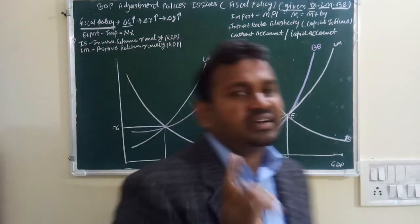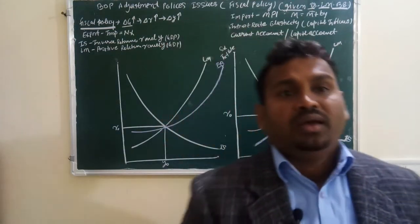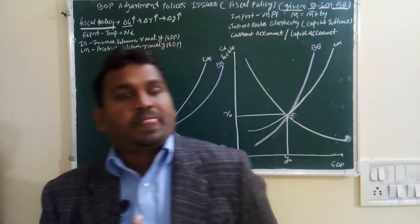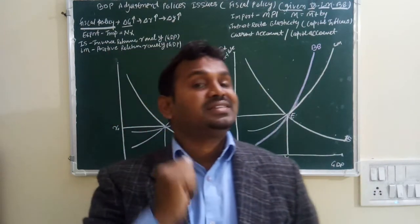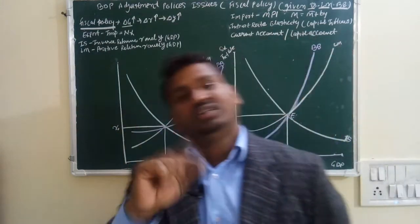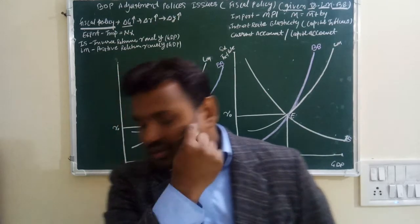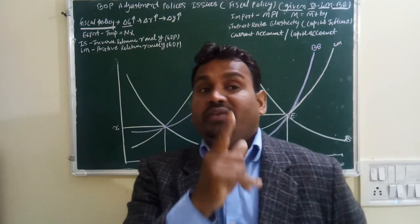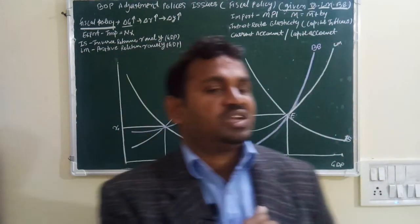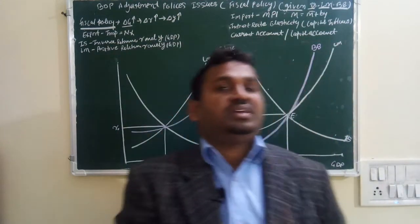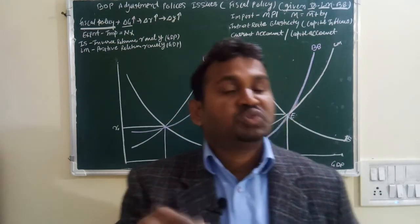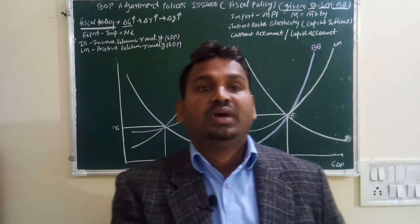If government expenditure increases — suppose G, which is government expenditure, increases — then the first impact is an increase in the interest rate in the market. If investment increases in the market, then private investment decreases. Private investment decreases because R increases. If R increases, private investment decreases — this is called the crowding out effect, which you learned in the previous class.